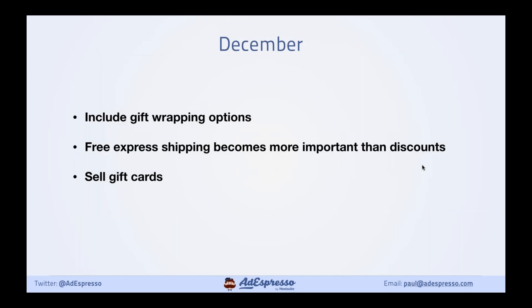The take-home message for phase three — maximizing sales — is that people's priorities change when they're shopping in December. It's not so much about discounts and deals; it's more about logistics. Can they get gift wrapping? Can it be sent straight to the recipient? Free express shipping is very important — more important than discounts. Guaranteed shipping in time for Christmas. And gift cards — if you don't sell them, you're probably leaving quite a lot of money on the table.